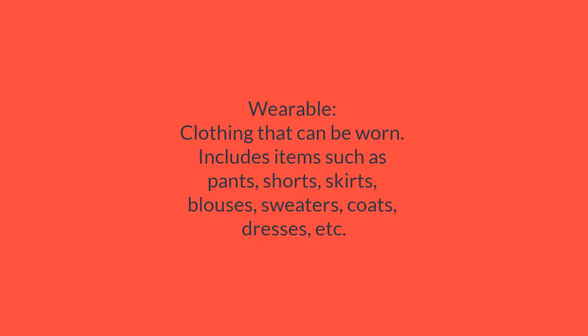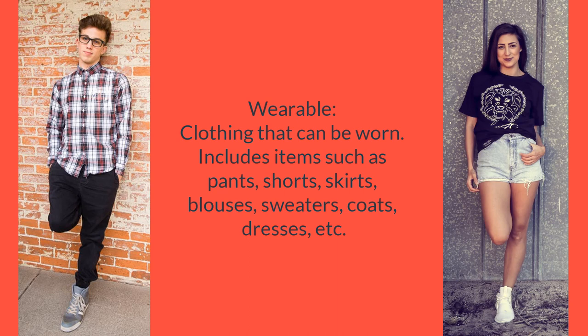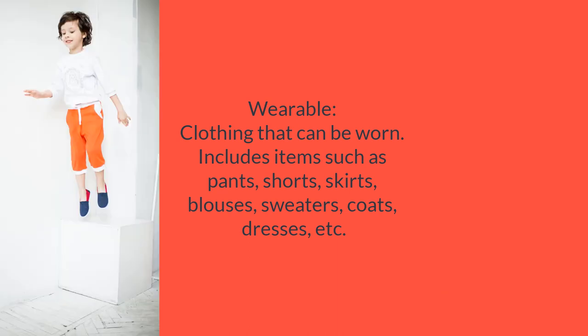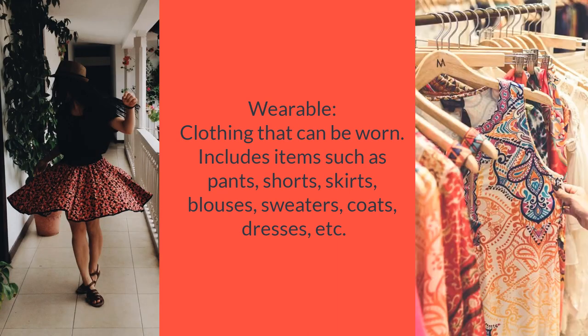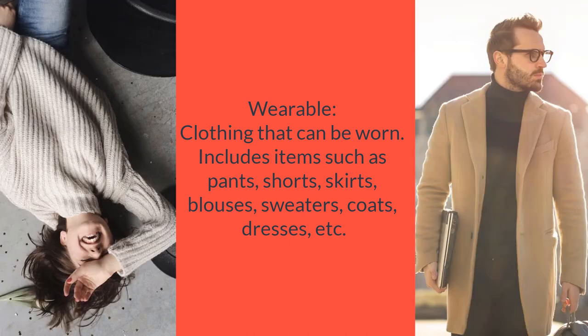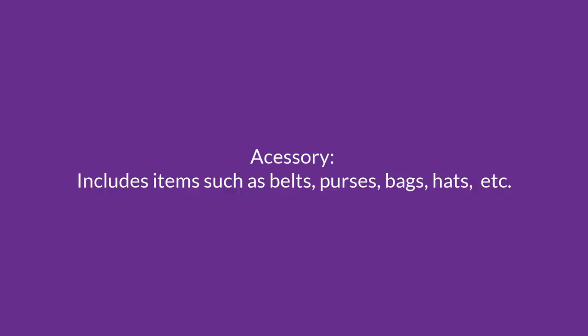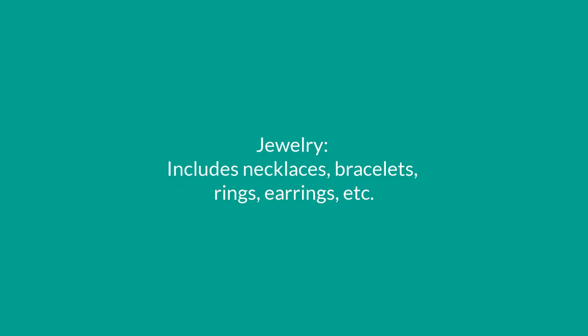Wearable is clothing — anything that can be worn. This includes items such as pants, shorts, skirts, blouses, sweaters, coats, and dresses — anything you wear. Accessory includes items such as belts, purses, bags, and hats.